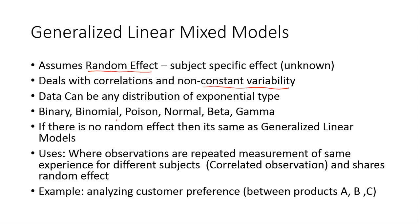We can also use this when the distribution is of exponential type. The data has to be distributed exponentially. Some of the exponential distributions are binary, Poisson, normal, beta, and gamma distributions.